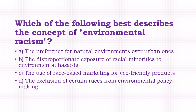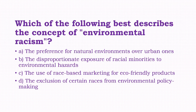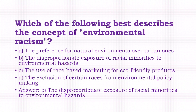Which of the following best describes the concept of environmental racism? Options: the preference for natural environments over urban ones, the disproportionate exposure of racial minorities to environmental hazards, the use of race-based products, the exclusion of certain races from environmental policy making. The answer is option B, that is the disproportionate exposure of racial minorities to environmental hazards.